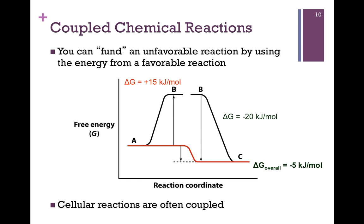One of the ways we can make an unfavorable reaction occur is to couple it with one that is favorable. As illustrated in our figure, the reaction on the left that converts reactant A to product B is unfavorable — delta G is positive 15 kilojoules per mole. However, the reaction on the right, which converts reactant B to product C, is highly favorable, releasing 20 kilojoules per mole of energy. If we couple these two reactions and sum the delta G values, the conversion of A to B to C becomes favorable overall, with a net delta G of negative 5 kilojoules per mole. Many cellular reactions are coupled in this way, either simultaneously or in rapid succession — this is especially common in metabolic pathways.